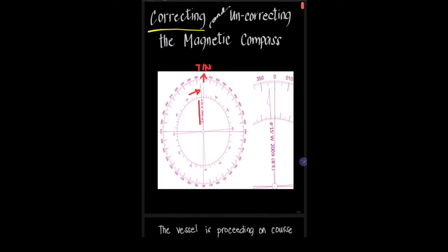So the purpose of correcting the reading from the magnetic compass, or the course that we get from the magnetic compass, is so that we can derive the true course, which is the course measured from the true north.